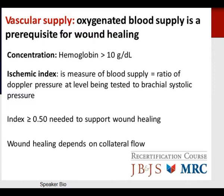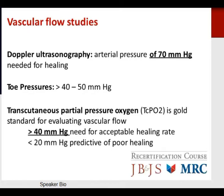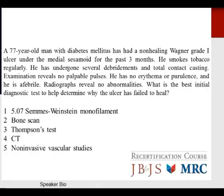Regarding vascular supply, oxygenated blood supply is a prerequisite for wound healing. A hemoglobin concentration greater than 10 g/dL is preferred. The ischemic index — ratio of Doppler pressure at the level tested to brachial systolic pressure — must be greater than or equal to 0.5. Doppler ultrasound arterial pressure of 70 mmHg or higher is preferable. Toe pressures greater than 40–50 mmHg are preferred. Transcutaneous partial pressure oxygen (TcPO2) is the gold standard: greater than 40 mmHg for acceptable healing, less than 20 mmHg predicts poor healing.